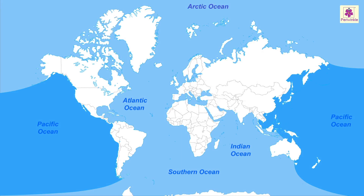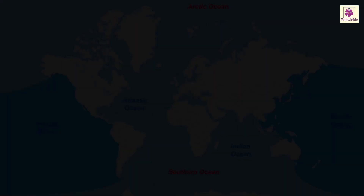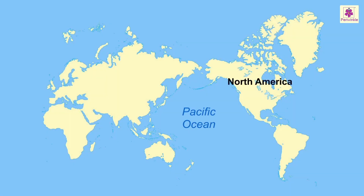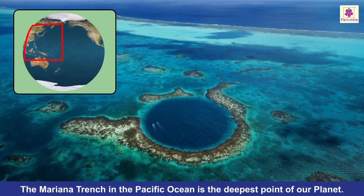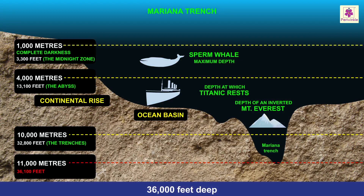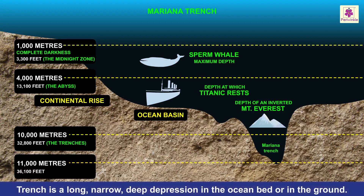The Pacific Ocean extends from the Arctic Ocean in the north all the way to the Southern Ocean in the south. It separates North and South America from Asia and Australia. The Mariana Trench in the Pacific Ocean is the deepest point of our planet, at around 36,000 feet deep. A trench is a long, narrow, deep depression in the ocean bed or in the ground.